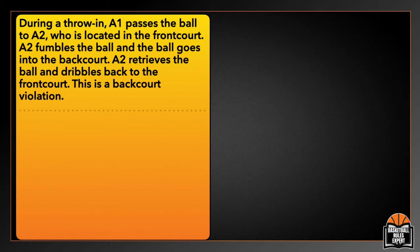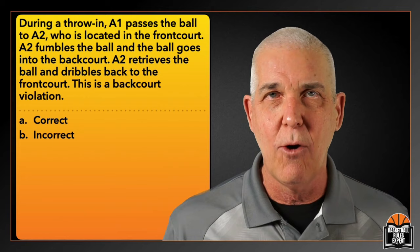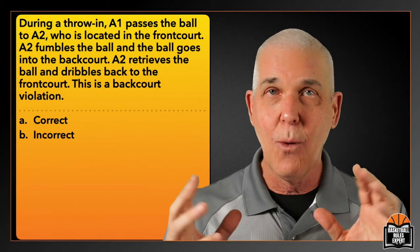Next question: During a throw-in, A1 passes the ball to A2, who is located in the frontcourt. A2 fumbles the ball and it goes into the backcourt. A2 retrieves the ball and dribbles back to the frontcourt. Is this a backcourt violation? A — correct, or B — incorrect? This question comes up over and over again. The throw-in contacts a teammate in the frontcourt, deflects off the player, and goes into the backcourt.